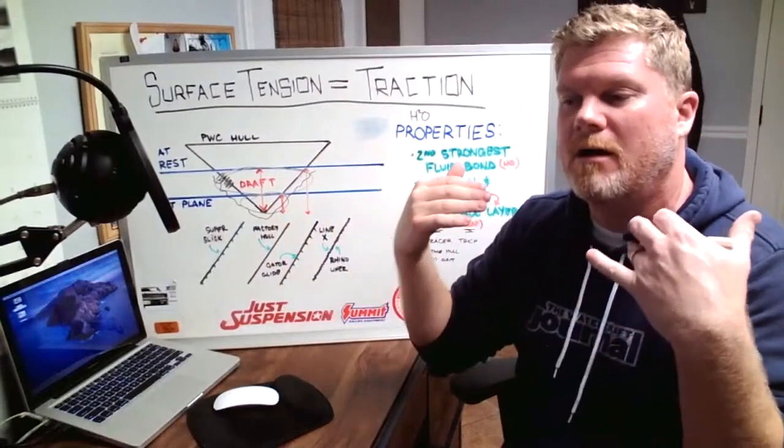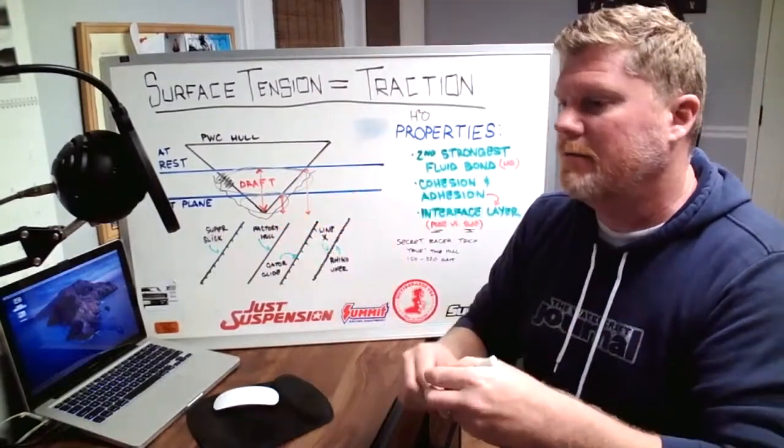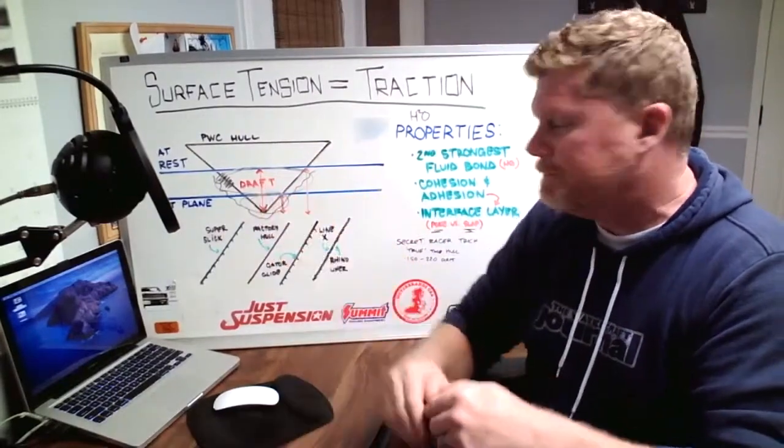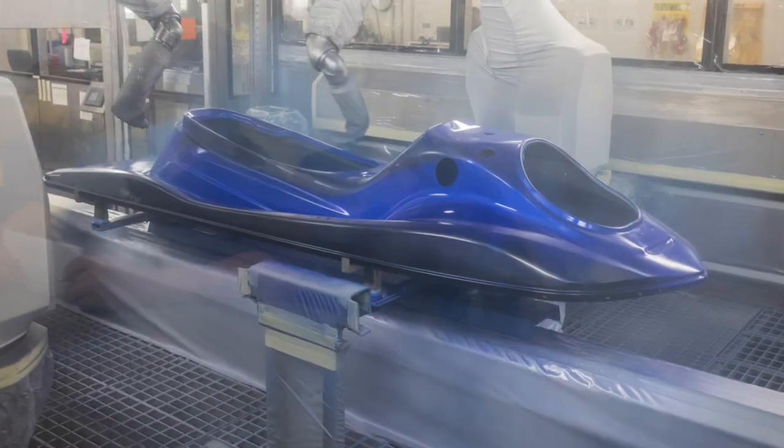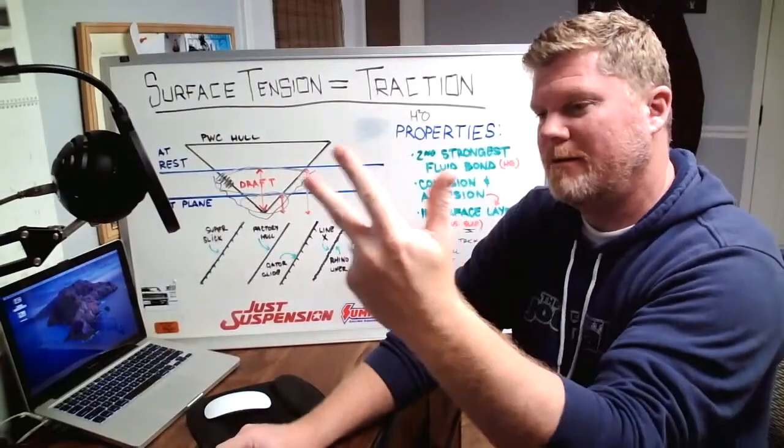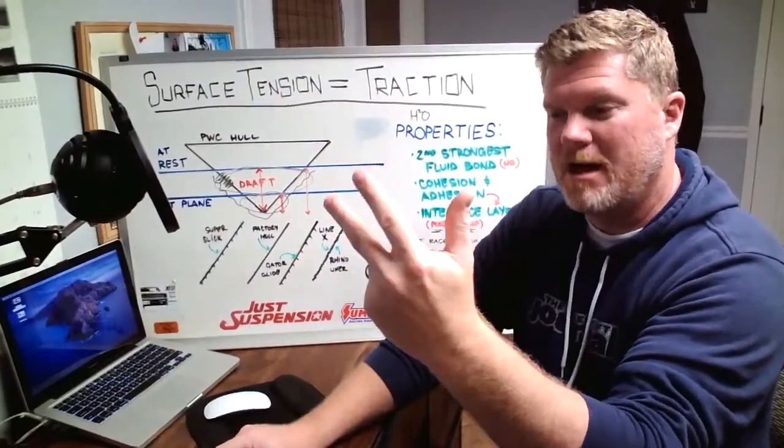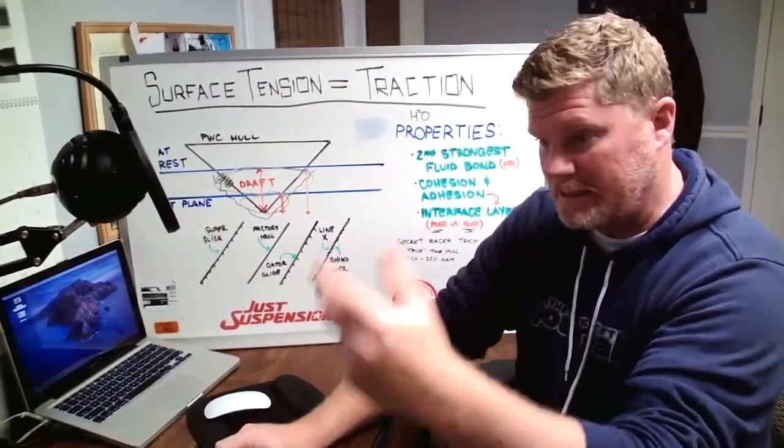Let's talk about hull surfaces. Let's just talk about the actual surface. Sea-Doo is acrylic. Yamaha is automotive paint over fiberglass, and Kawasaki is gel coat over fiberglass.